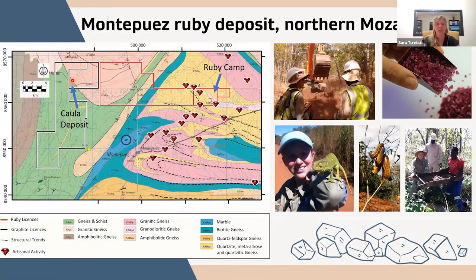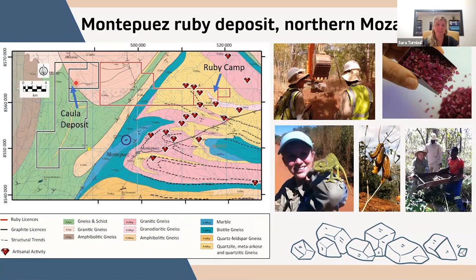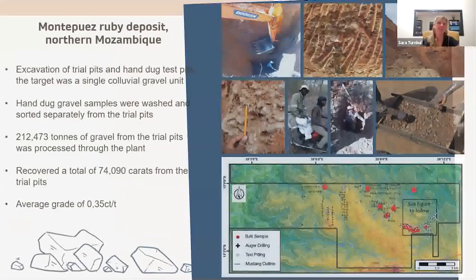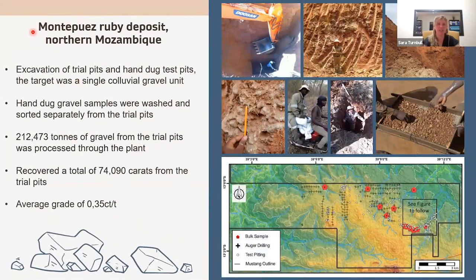I was exposed to auger drilling on the Montepuez ruby deposit. During winter when there was no water, we would drill at the Kaula graphite deposit. We also had the Montepuez ruby deposit nearby, which we would focus on in summer because we had the rains to run our processing plants. Another positive was that rigs, vehicles, and logistics don't get stuck in the mud as they do during the heavy rains.